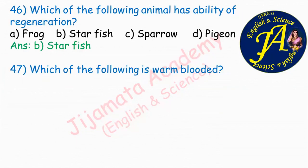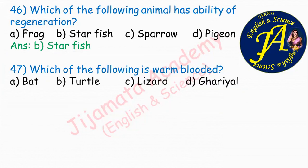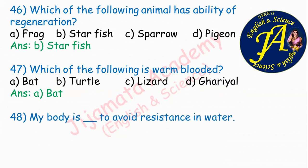Which of the following is warm blooded? Options are bat, turtle, lizard, gharial (crocodile). Correct answer is bat because bat is a mammal, and all mammals are warm blooded. All other classes of vertebrates are cold blooded and can change their body temperature with the surroundings. Mammals maintain a constant body temperature, hence warm blooded. Answer is option A: bat.